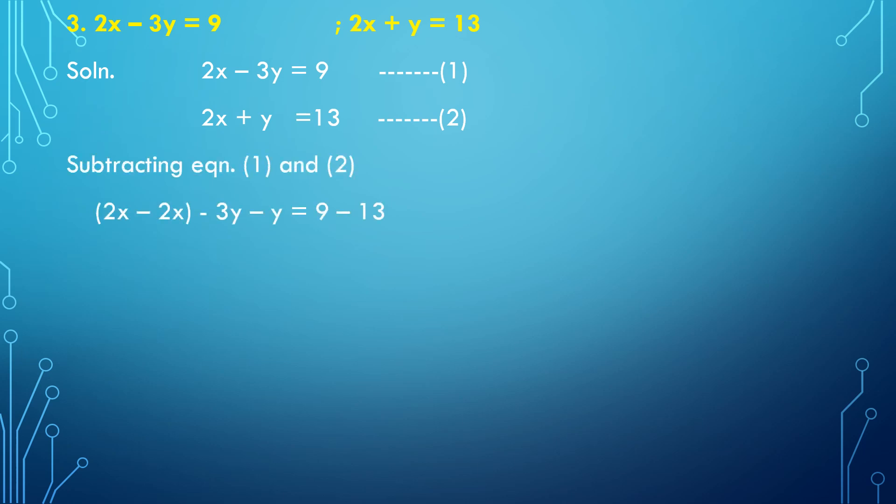Subtracting both equations: 2x minus 2x gets cancelled. Minus 3y minus y equals minus 4y, and 9 minus 13 equals minus 4. So minus 4y equals minus 4; the minus signs cancel, giving y equals 1.